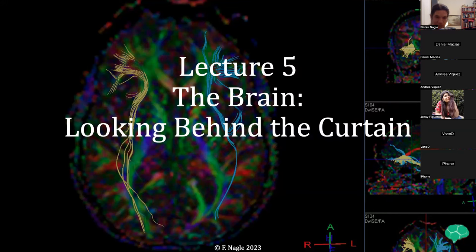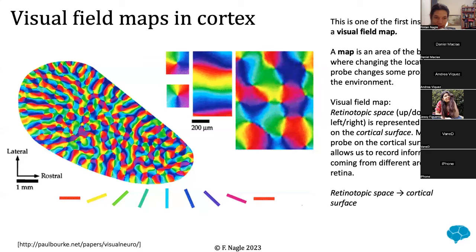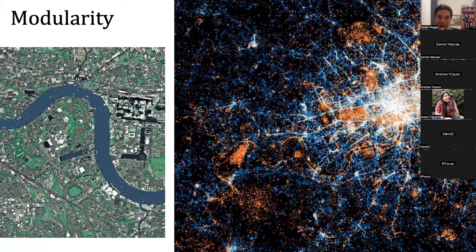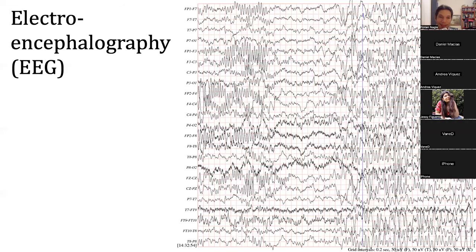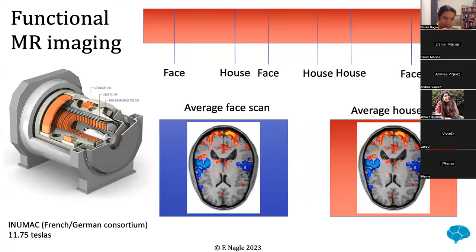In lecture five we'll go back to the brain and ask how it solves processes like vision. We can see a map in the visual cortex at the back of the head that's sensitive to different directions of motion — red is off to the left, blue is up. We'll talk about modularity — the brain is often seen as like a city where lots of different systems work in parallel to run the mind. We'll look at EEG, which is very good in time but less so in space, and MRI scanning, which is better in space but less good in time.